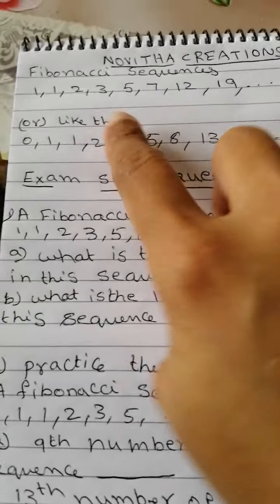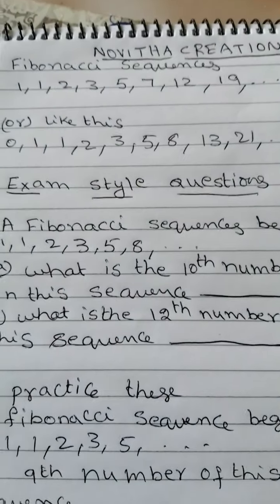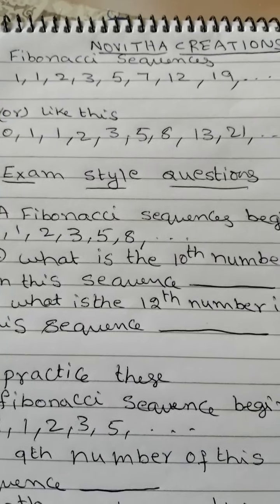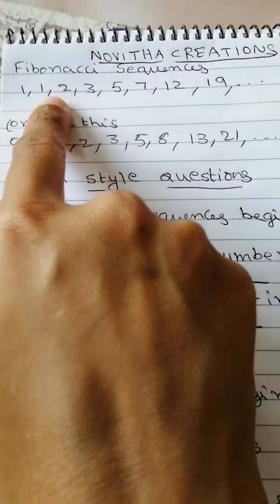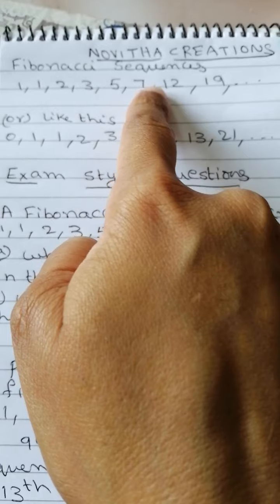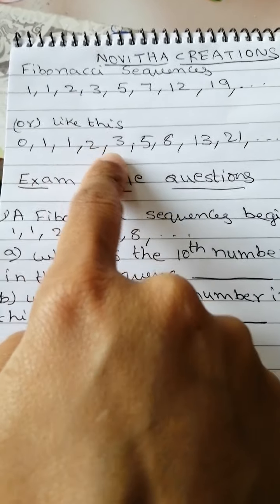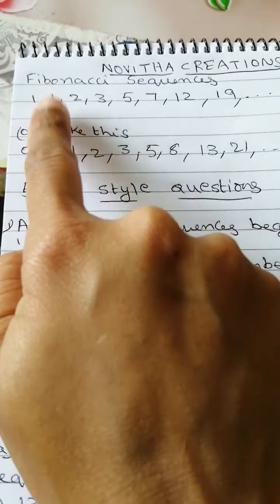Fibonacci Sequences looks like this. These are one type of sequences like this: 1, 1, 2, 3, 5, 7, 12, 19 and 0, 1, 1, 2, 3, 5, 8, 13, 21.